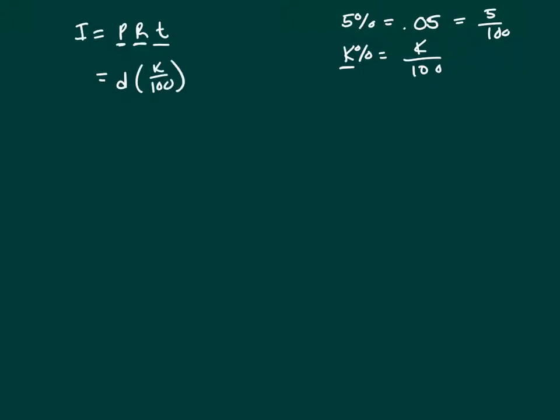So K over 100, time in years, which they tell me is 2, and my interest earned is 600.